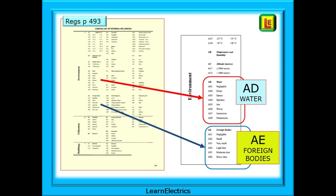We can go there now, and if we look at page 493, we will find, among many others, two groups of influences: AD for water-related influences, and AE for the influence of foreign bodies, or solid objects. The numbering of them will become clearer in a few minutes. Remember how to find this page — you will use it a lot.